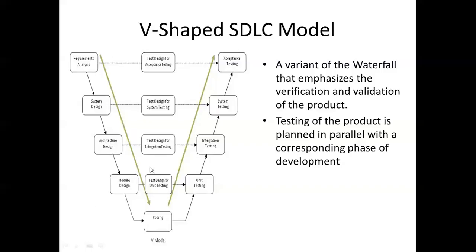Once architecture design is completed, they do the module design. In module design, they go inside each module and design it further — what functionalities each module will have and how each functionality should work. This is the low-level design. The architecture design identifies what modules exist and how they communicate, whereas module design goes inside each module and defines its behaviors and functionalities.